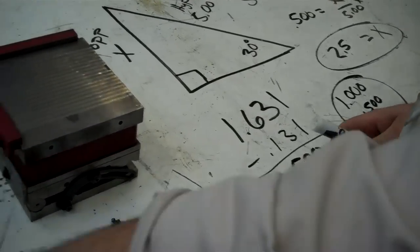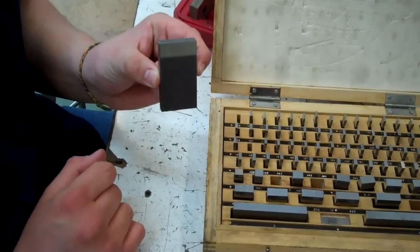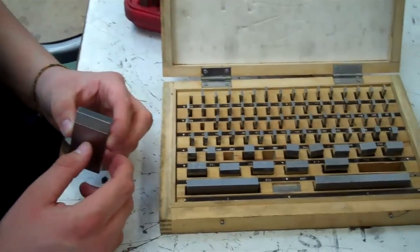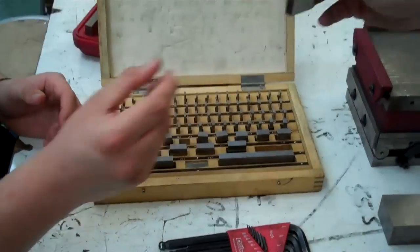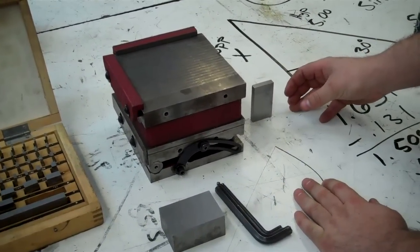So that's what we're going to use right here, our 2 1/2 inches that are stacked up to set up our sine chuck. Now, the next step in the process would be to set up our sine chuck to get ready for grinding.